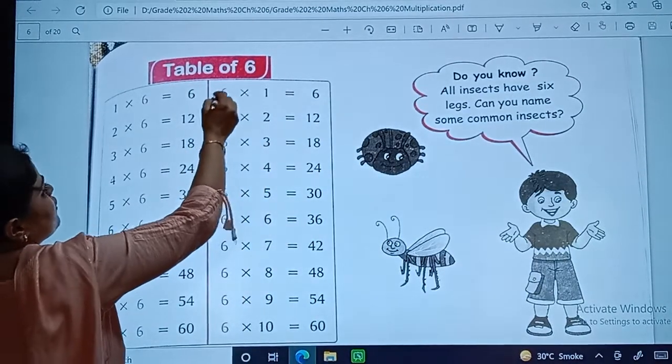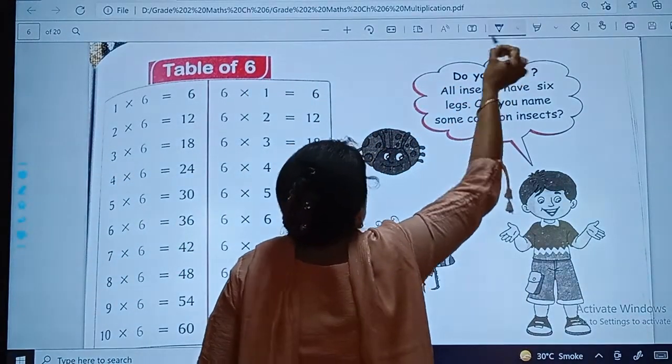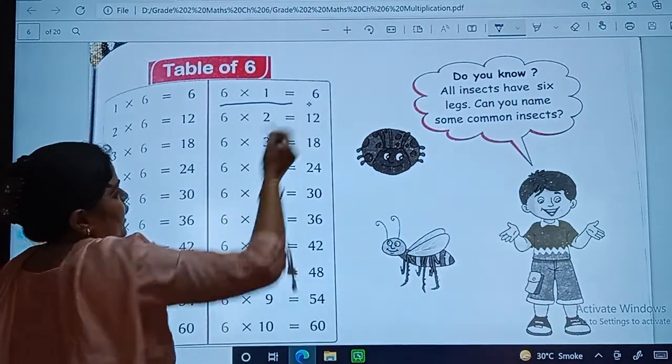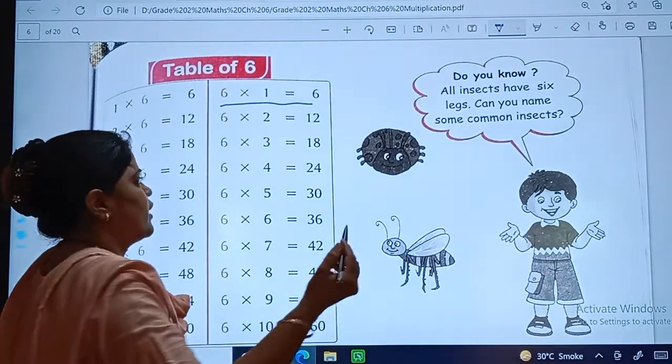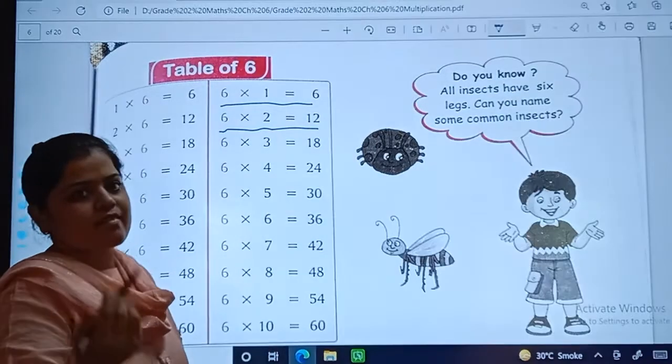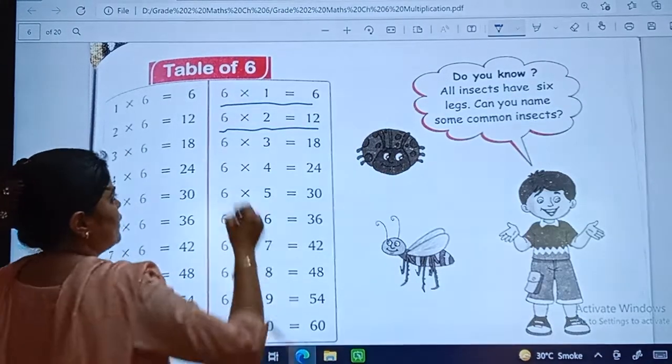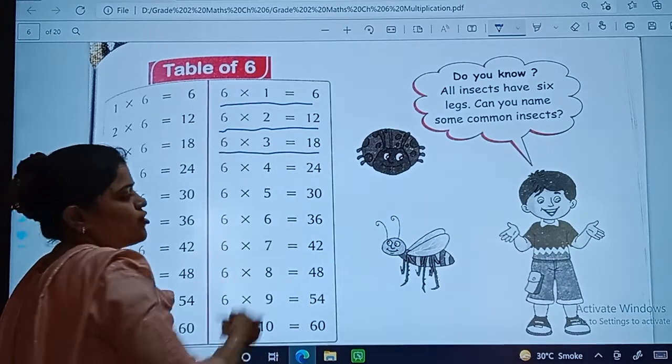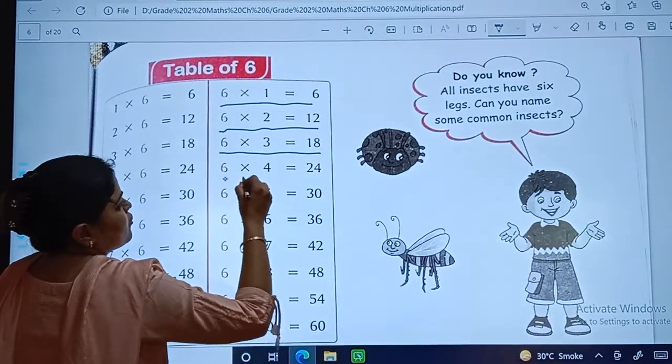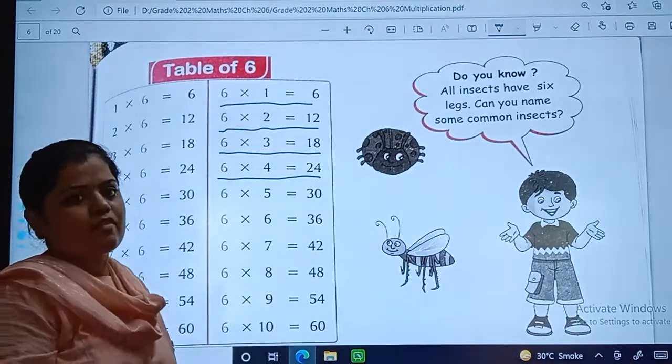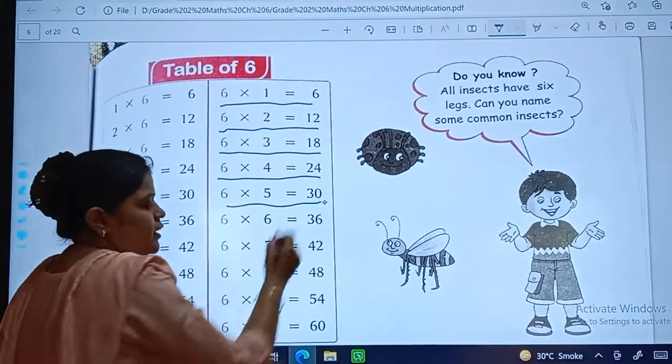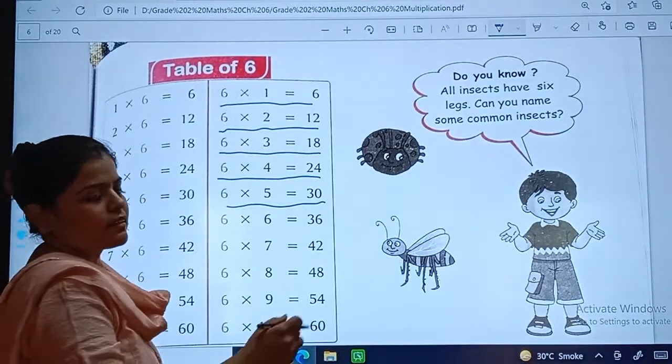Now dear students, come on, write along with me. 6 ones are 6. 6 twos are 12. 6 threes are 18. 6 fours are 24. 6 fives are 30.